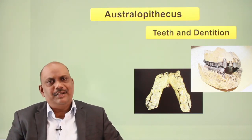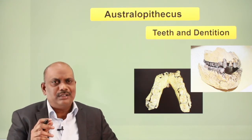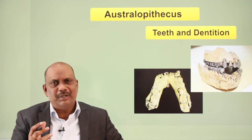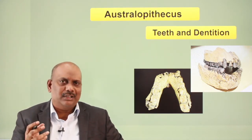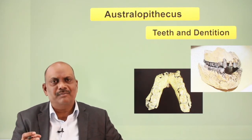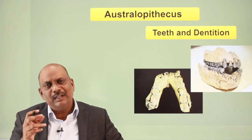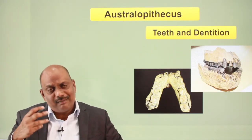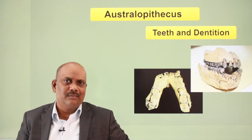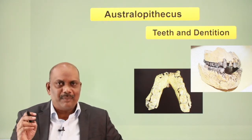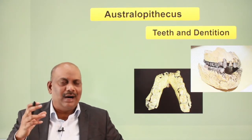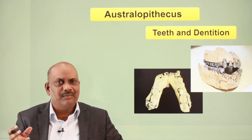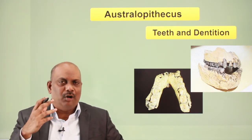Teeth and dentition. In paleontology, the study of teeth reveals much information about the biological and cultural aspects of the fossils we are studying. By studying the teeth, we are in a position to understand what they ate and what the environment was like. It is by studying the dentition that we understood that robusts were purely vegetarian and graciles were omnivorous.